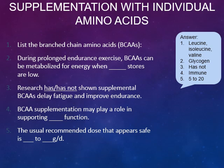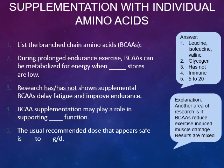The branched-chain amino acids are leucine, isoleucine, and valine. During prolonged endurance exercise, branched-chain amino acids can be metabolized for energy when glycogen stores become low. Research has not shown branched-chain amino acids to delay fatigue or improve endurance; however, branched-chain amino acid supplementation may play an important role in supporting immune health. The usual recommended dose that appears to be safe is 5 to 20 grams per day — make sure intake falls within this range.